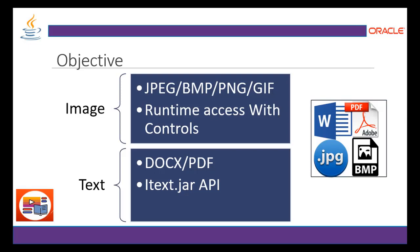We are going to convert images with runtime access and controls. For the text file section, we'll look at MS Word files — Microsoft Word 2007 version — with the DOCX file format extension, converting to PDF and vice versa. The iText jar file is one library we are going to use, along with the Apache POI API.